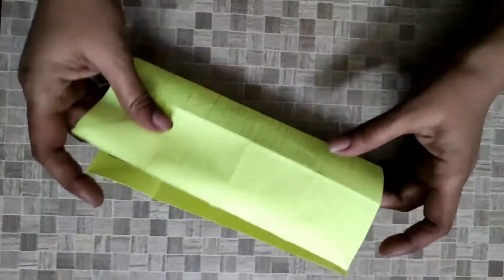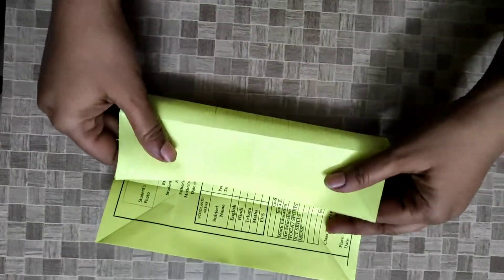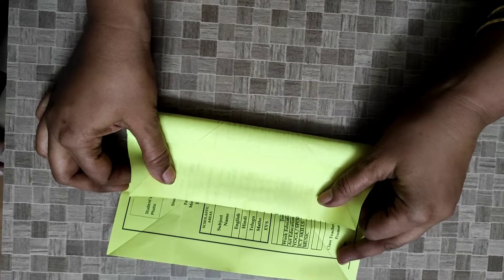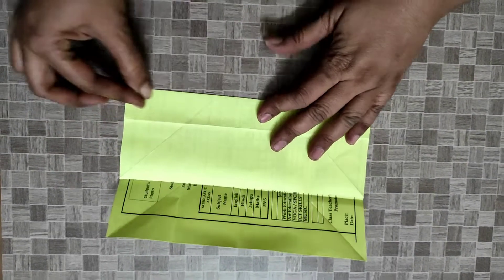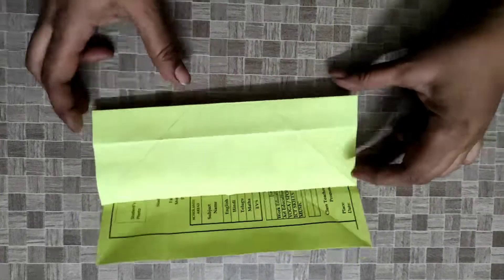Here, this is half. So up to here we fold it, that means one fourth. You have to fold, so here you will get a small box.